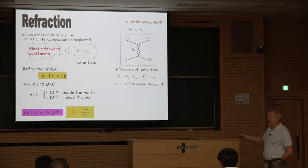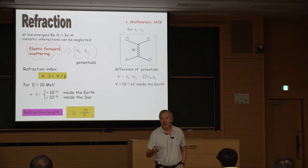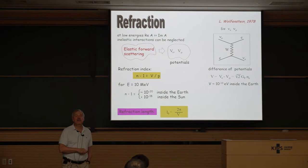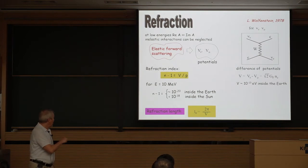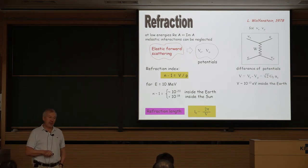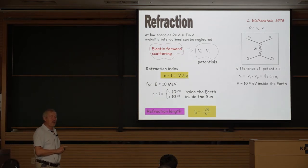The physics is the same as for usual refraction: one expects bending of neutrino trajectories, as for light, or reflection. However, due to the small value of n−1, these effects are essentially negligible. Refraction is important for oscillations because you need to compare n−1 with the quantity Δm²/2E. This Δm²/2E is extremely small, and it may happen that even these very small refraction indices can be important.